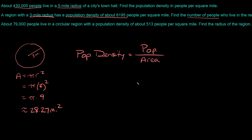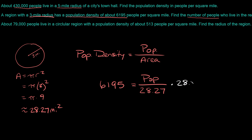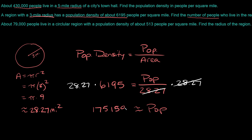So that's the area. The problem also tells us the population density is 6,195. So we get 6,195 equals the population over 28.27. To solve for the population, we multiply both sides by 28.27 — those cancel out — giving us the population is approximately 175,159. That's the population of this region.